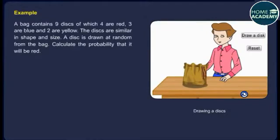A bag contains 9 disks of which 4 are red, 3 are blue, and 2 are yellow. The disks are similar in shape and size. A disk is drawn at random from the bag. Calculate the probability that it will be red.